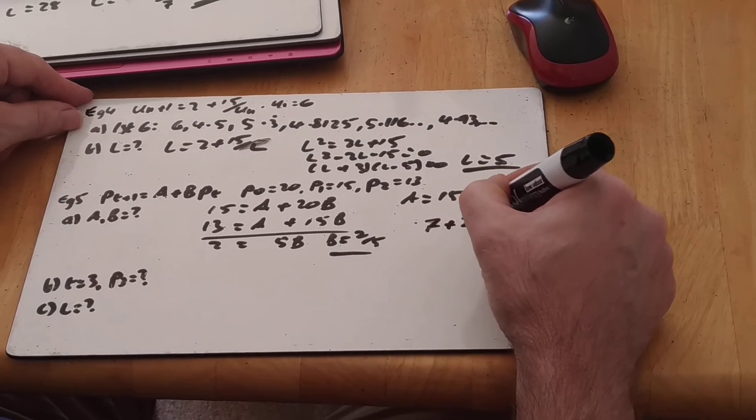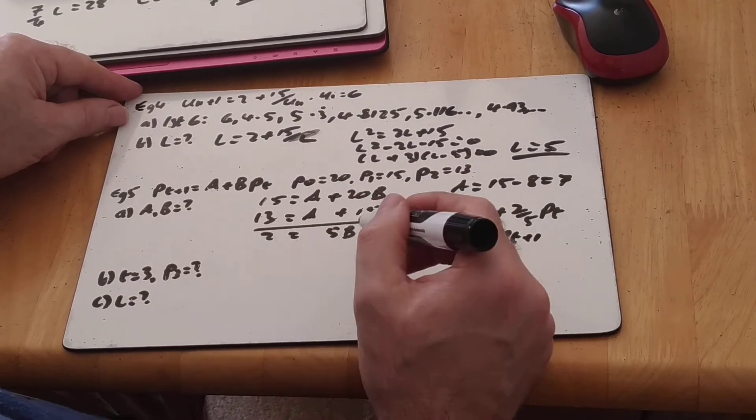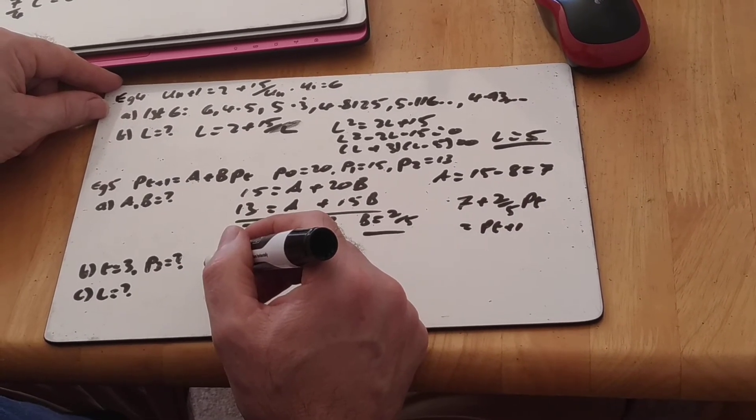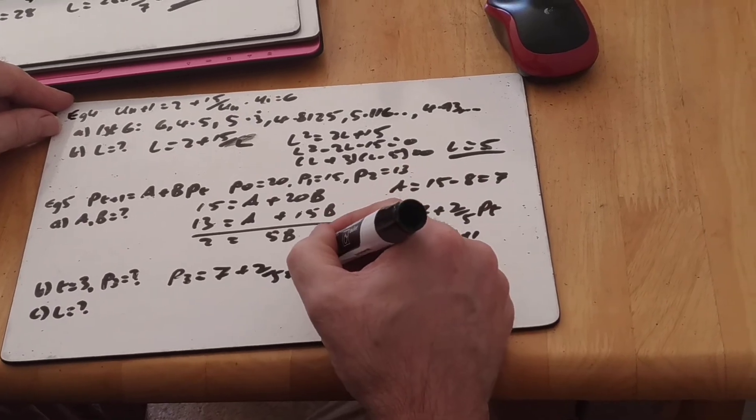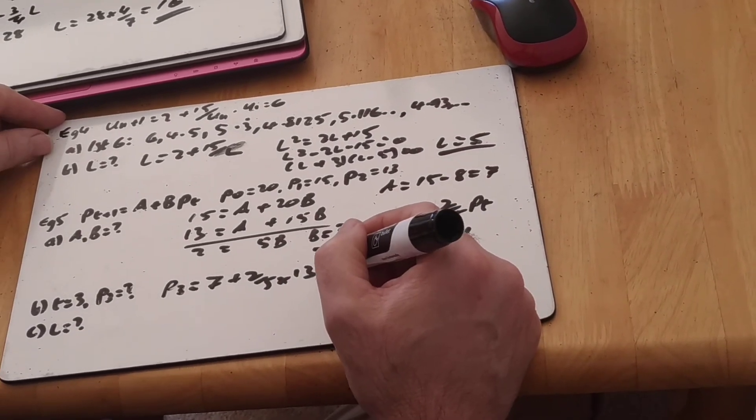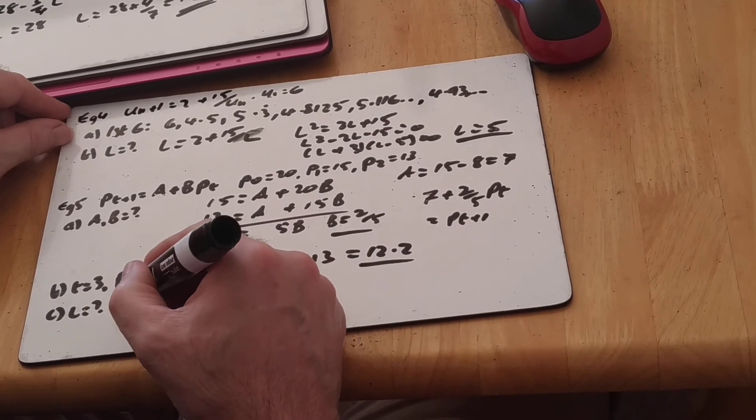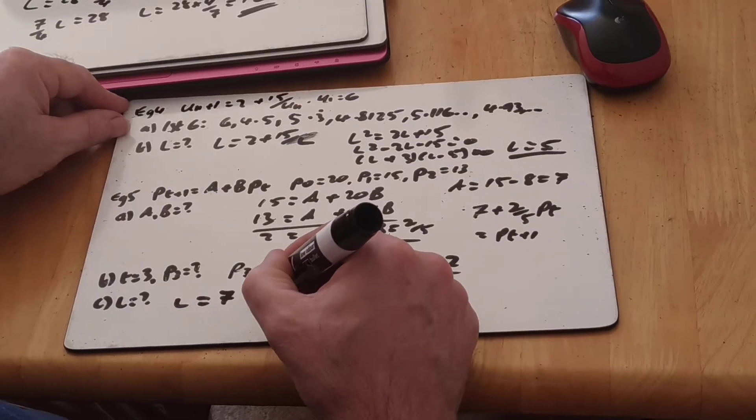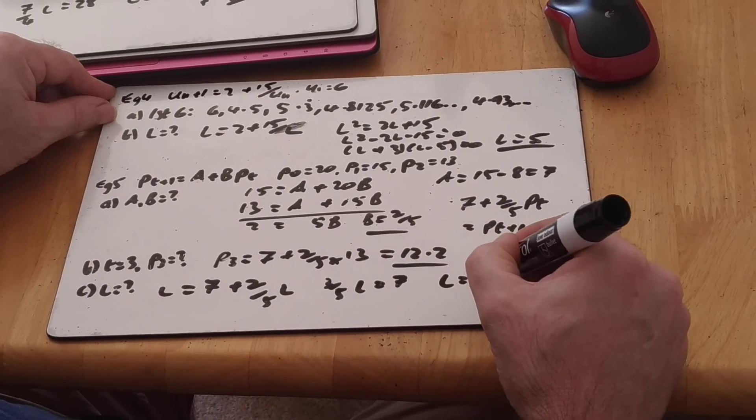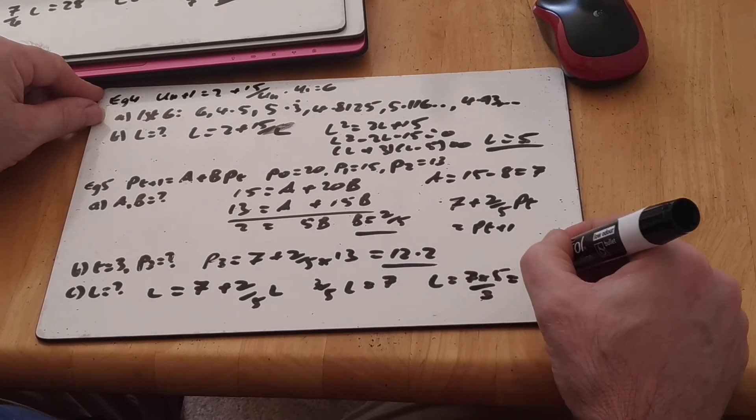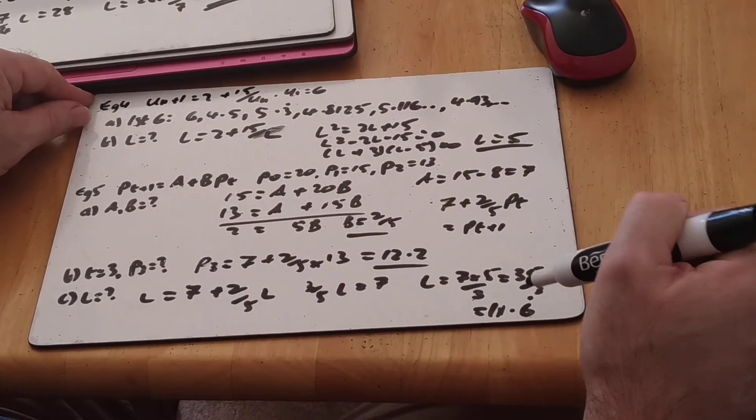And I can use those to find the next ones. So it wants T is 3, so it wants P3 basically. So P3 will equal 7 plus 2 fifths times the one before, 13, which is 26 over 5, 5.2, so 12.2. And it wants the limiting value, so it's similar to the one before. So I'm going to solve L equals 7 plus 2 fifths of L. Move it across. 3 fifths of L equals 7. L equals 7 times 5 over 3, which is 35 over 3, which is 11.6 recurring. That looks about right. 20, 15, 13, 12 and a bit, and tending towards 11.6.